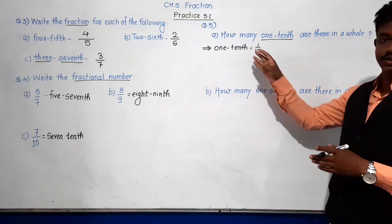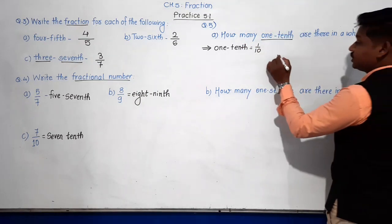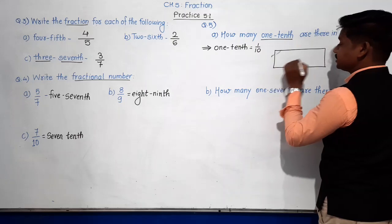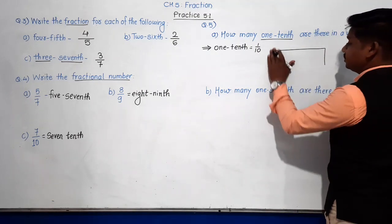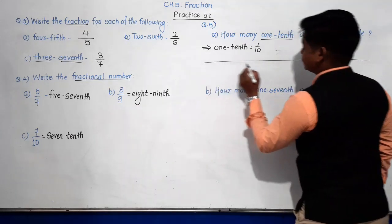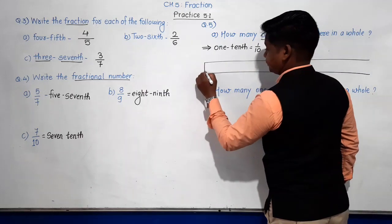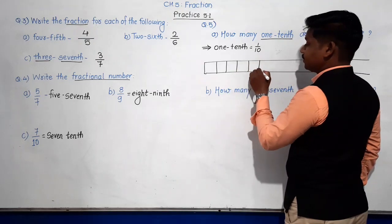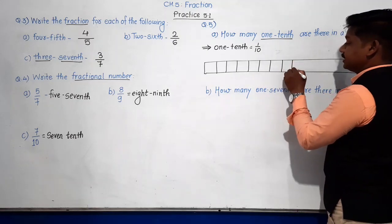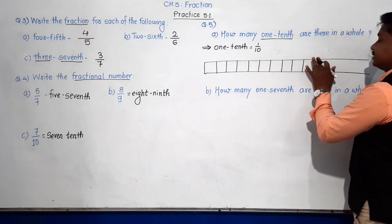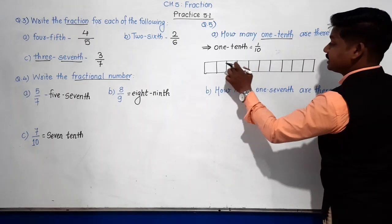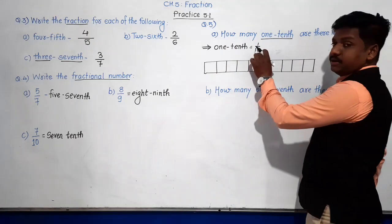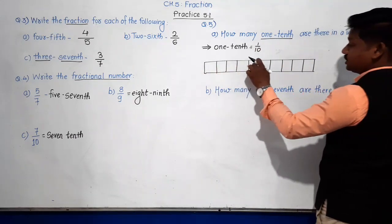Such how many fractions or parts will you get in the whole? Suppose there is one whole. It is divided into ten equal parts — one, two, three, four, five, six, seven, eight, nine, and ten. As we have one-tenth, the number below the bar indicates the total equal parts. This is one strip, divided into ten equal parts.